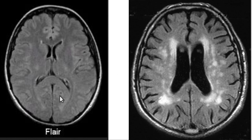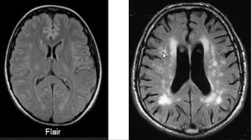Here's a normal brain on a FLAIR sequence, meaning the cerebral spinal fluid is suppressed - it's dark on this MRI. And here is an abnormal brain MRI. These are the ventricles with cerebral spinal fluid, and the periventricular white matter has tons of hyperintense lesions. These are all strokes.